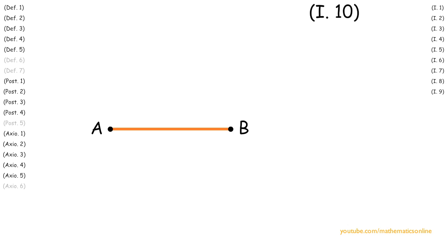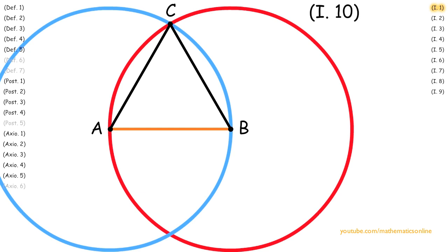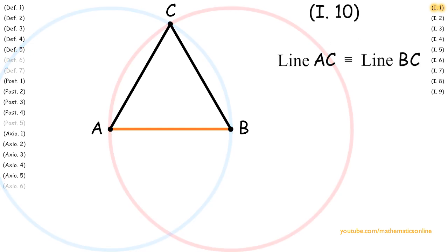First, we apply Proposition 1 to create a perfect equilateral triangle on line AB. This gives us line AC is congruent to line BC.